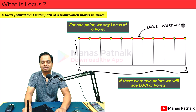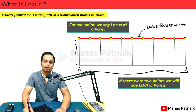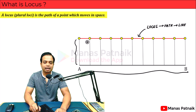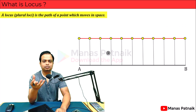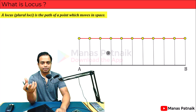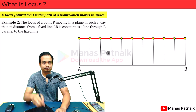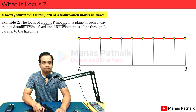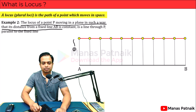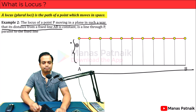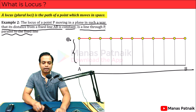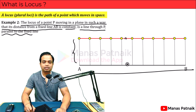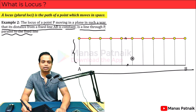The locus of this point — that is, the path of the point — is a line, with the one requirement being that the distance maintained is constant. Formally: the locus of a point P moving in the plane such that its distance from a fixed line AB is constant is a line through P parallel to the fixed line AB. As you can see, the locus line and the fixed line are both parallel to each other.